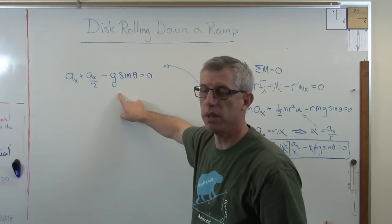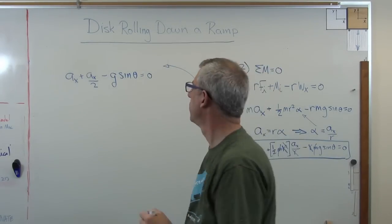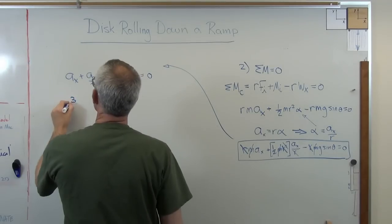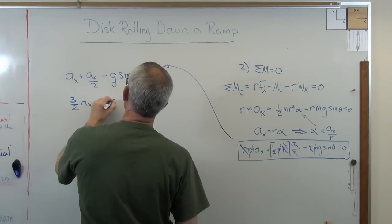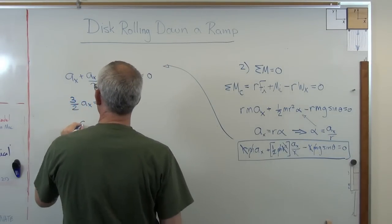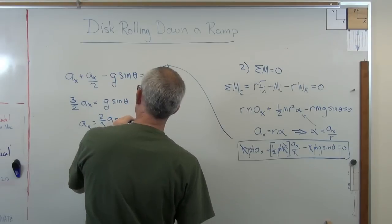So if we simplify this down some more, we'll get three over two A sub X equals G sine theta or A sub X equals two over three G sine theta. Man, that's simple.